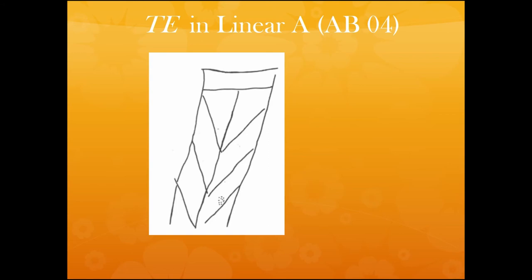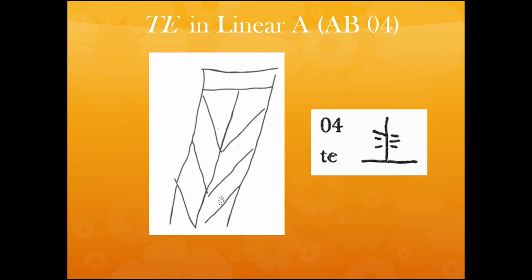We have sign T in Linear A too. This is not just the pure sign T, because we do not have the pure sign T in Linear A — we have it inscribed inside another sign. In this case it is inscribed inside the logogram for wine. But we can see that it is made of a vertical stroke and three lateral strokes. This time they are not horizontal but rather oblique. And if we make a comparison between the Linear A and Linear B sign, we can see this difference between the horizontal strokes and the oblique strokes.